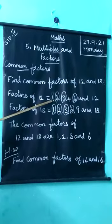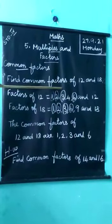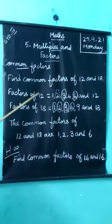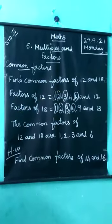1 is the factor of all numbers. So we write first one 1, 2, 3, 4, 6 and 12. In the number 12 are exact divide. So these numbers are the factors of 12.